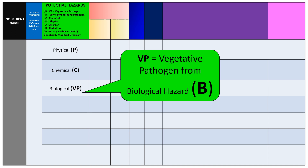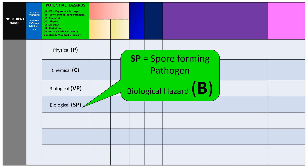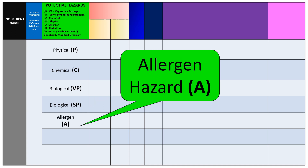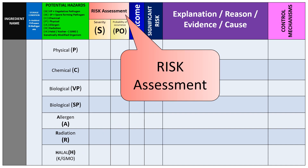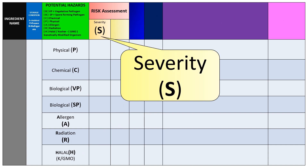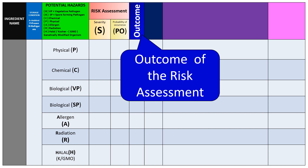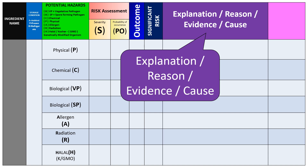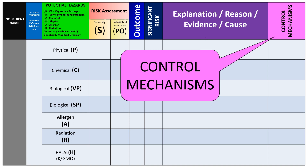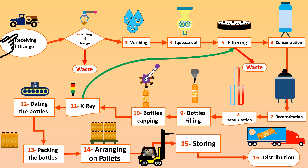Under biological hazard, we distinguish vegetative pathogens like E. coli, Salmonella, or Staph, versus spore-forming organisms like Bacillus cereus or Clostridium. Other columns include allergen, radiation, and halal or GMO (genetically modified organism). The risk assessment cell captures severity multiplied by probability or likelihood of occurrence, followed by the outcome of that multiplication, whether the risk is significant (yes or no), the reason or cause, and finally the control mechanism.